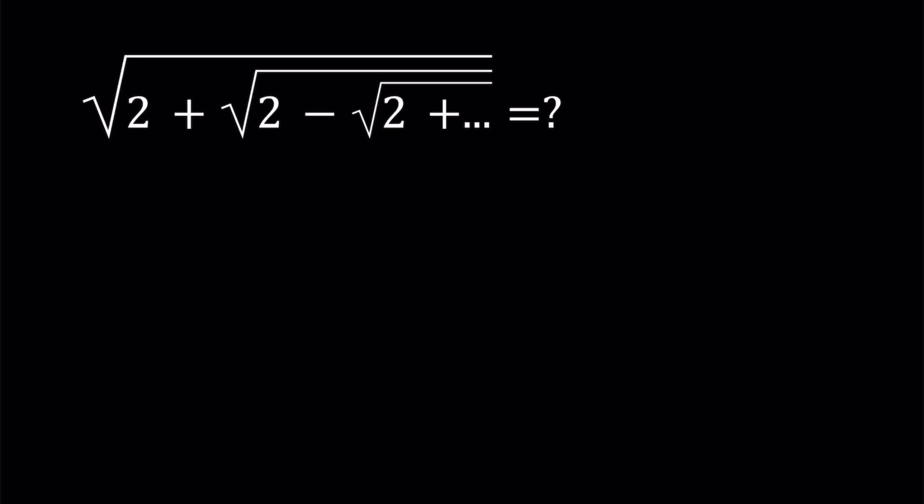And we're always going to have 2 inside the radicals. So if we had all plus signs, we would have something like this before. You know that these expressions converge, we're not going to get into the proof, but these expressions converge. Since our expression is always smaller than that because we have the minus signs, which is going to make it smaller, this expression is also going to converge to a certain value.